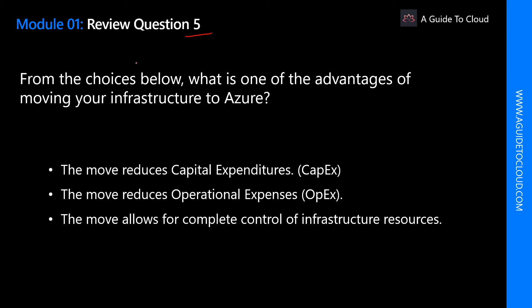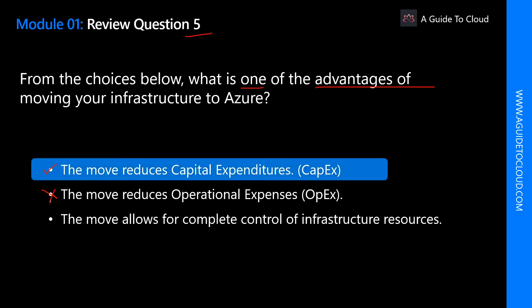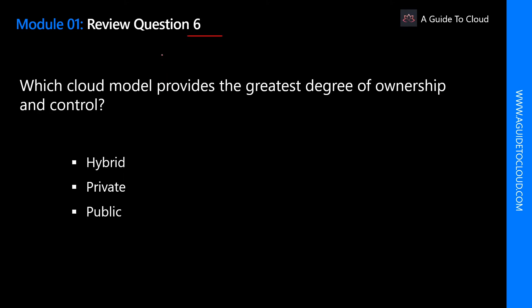Question 5: From the choices below, which is one of the advantages of moving your infrastructure to Azure? The keyword is 'advantages of moving your infrastructure to the cloud.' The first option — the move reduces capital expenditure — is correct because public cloud deployments reduce capital expenditure since there is far less infrastructure to buy; you efficiently rent only what you use as you use it. The option 'the move reduces operational expenditure' is not correct. The option 'the move allows for complete control of infrastructure resources' is also wrong. The right answer is: the move reduces CapEx.